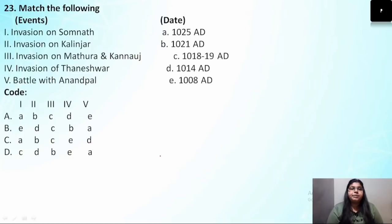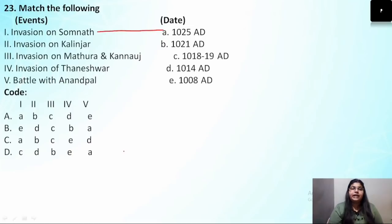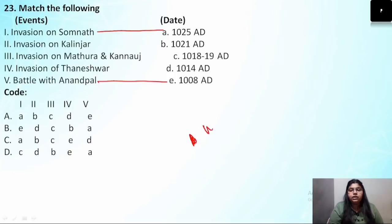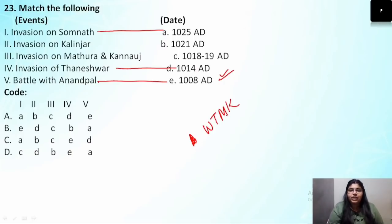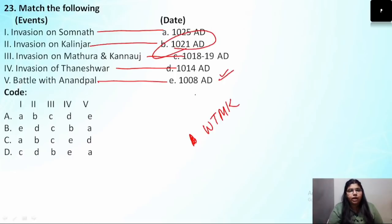Question number 23: Match the following — the Somnath invasion was in 1025; the first battle with Anandpal at Vahind was in 1001 AD; the invasion of Thaneshwar was in 1014 AD; Mathura in 1018–1019; and Kalenjar in 1021 AD. Using the WTMK mnemonic, Vahind first, then Thaneshwar, then Mathura, then Kalenjar, then Somnath. The correct answer is option A.